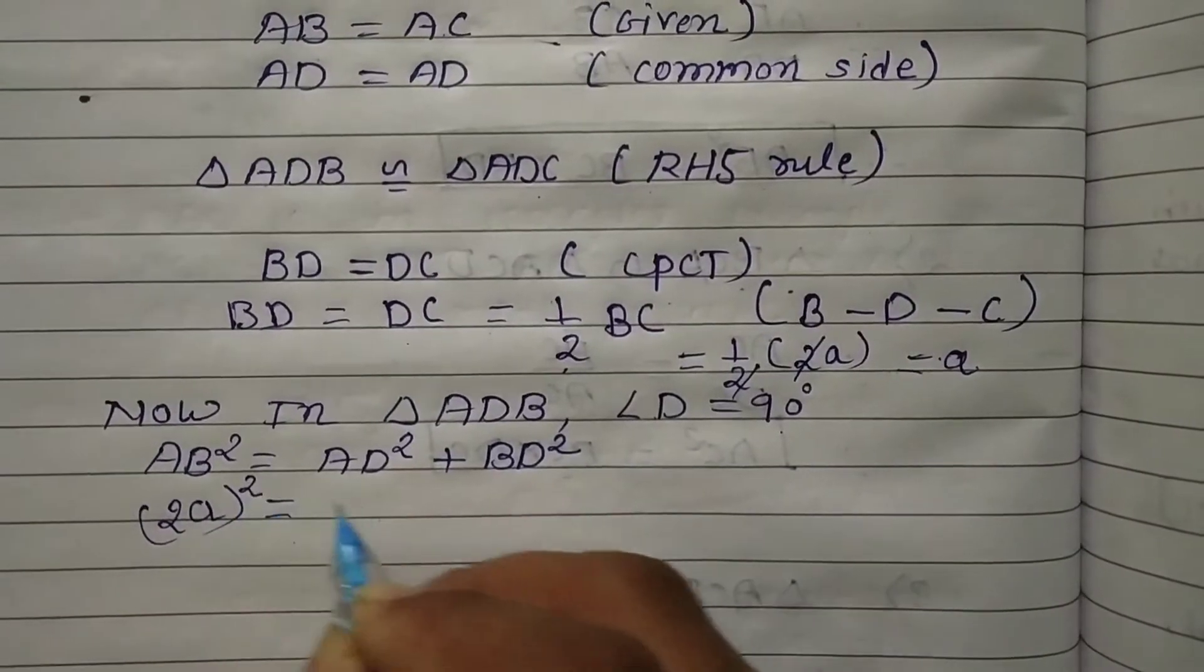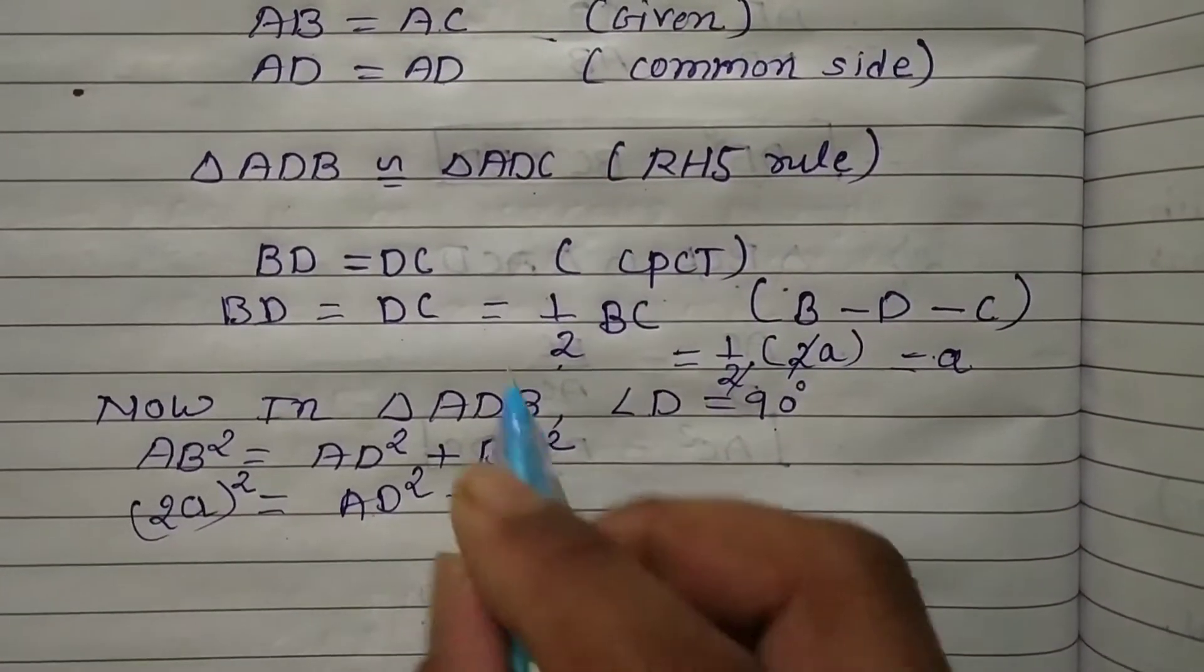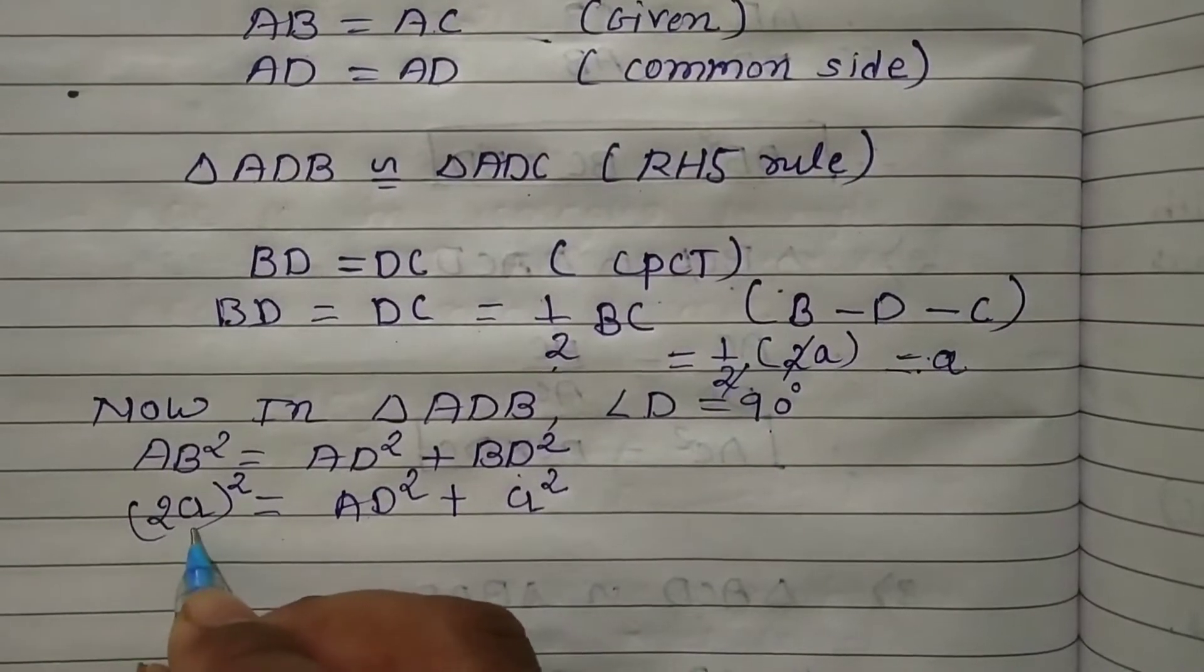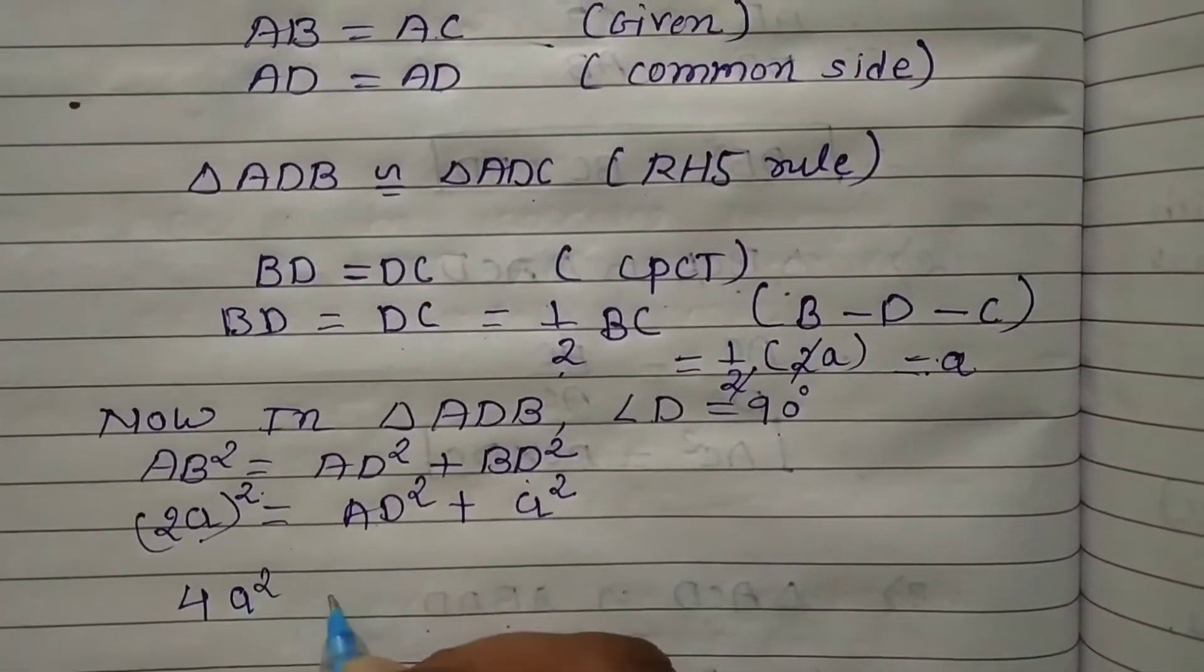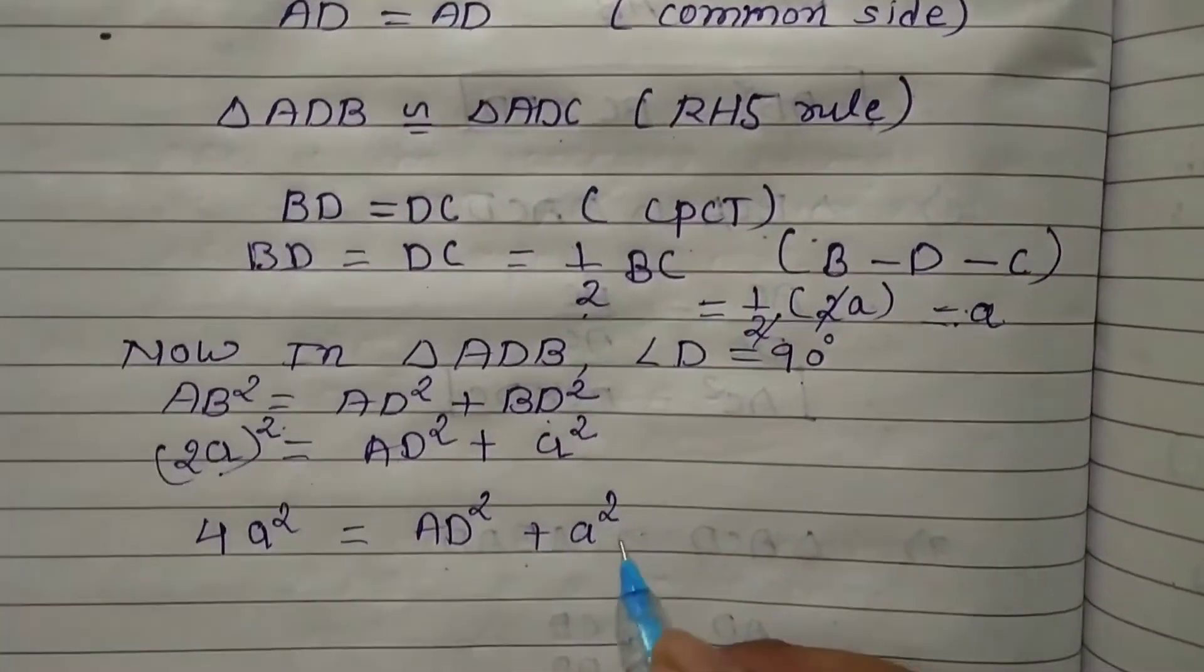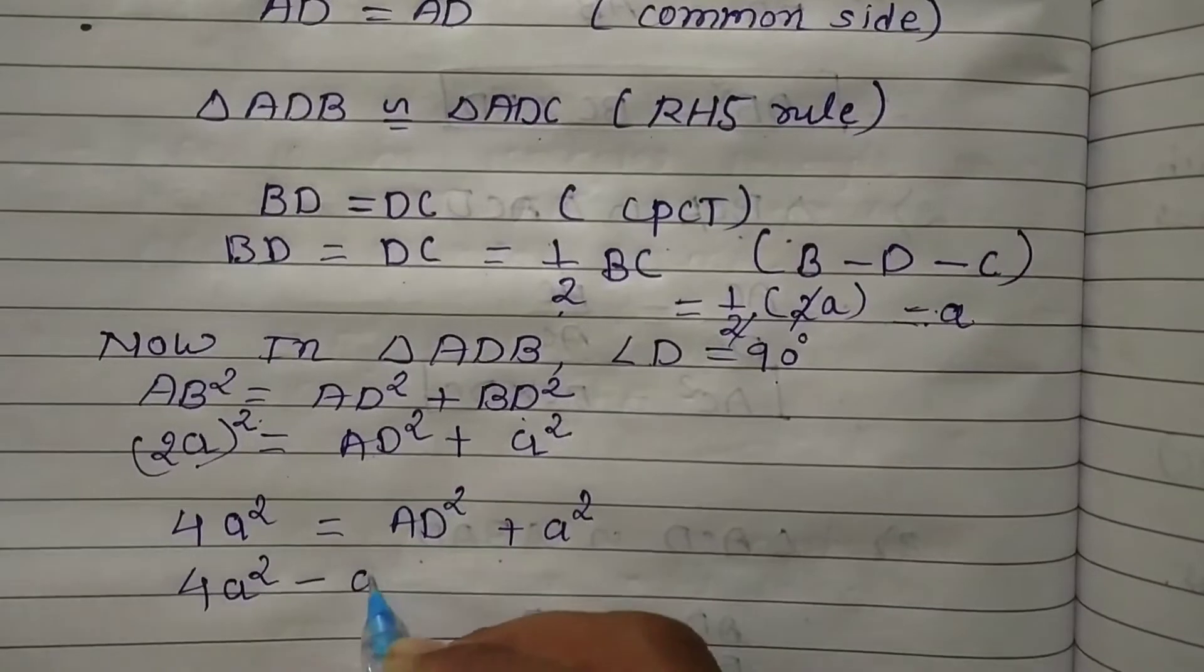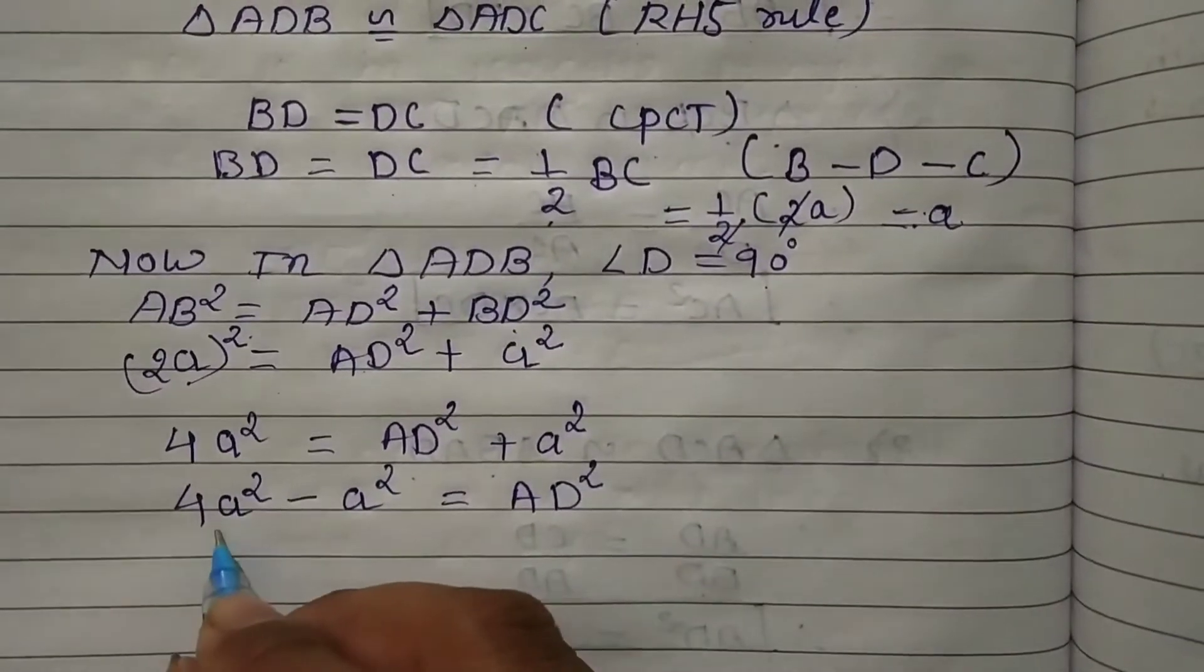(2a)² = AD² + BD². We want to find AD. BD = a, so BD² = a². Therefore, 4a² = AD² + a².